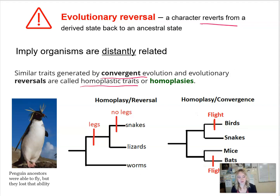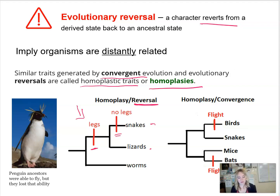Similar traits generated by convergent evolution and evolutionary reversals are called homoplastic traits, or homoplasies. For example, looking at the presence or absence of legs: the common ancestor of snakes and lizards had legs, but snakes no longer have legs — that is evolutionary reversal. Another example: birds and bats both have wings and can fly, but this trait emerged through convergent evolution, so birds and bats would not sit close to one another in a tree of life.